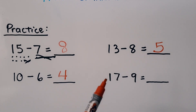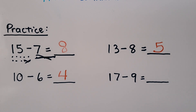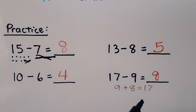Here we have 17 minus 9. We can start at 9 and count up to 17, but that's a lot of counting and we might lose track. We could also think of a related addition sentence: 9 plus some number is equal to 17. 9 plus 8 is equal to 17, so our missing difference must be 8.